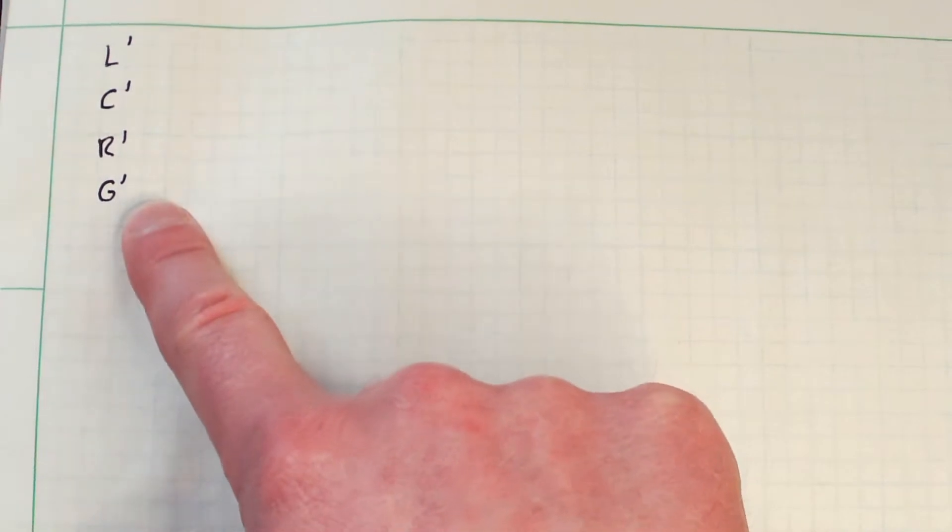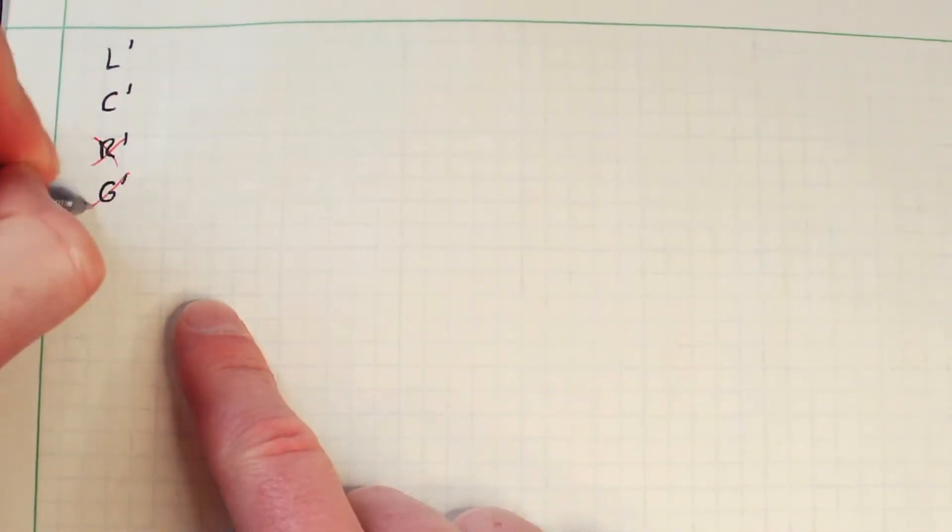Now in practice, R' and G' are generally going to be very small to the point of being negligible, because after all, what good is a coaxial cable transmission line if it is extremely lossy?